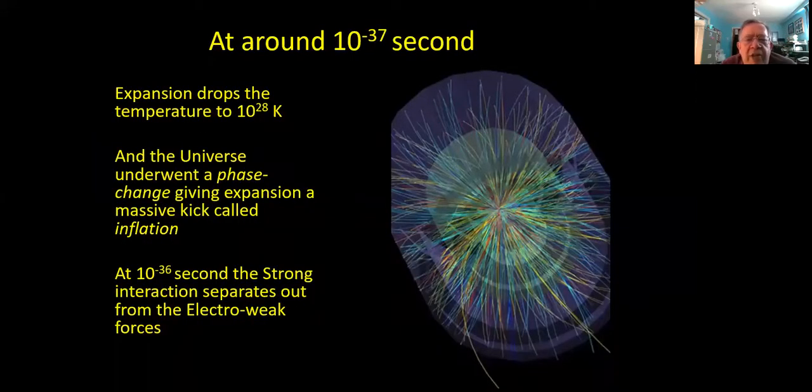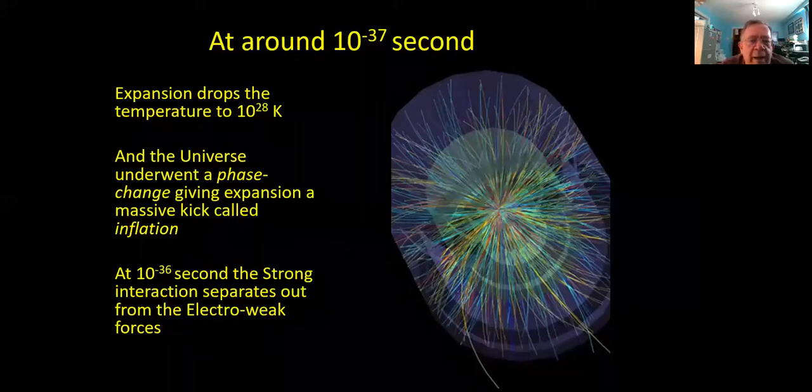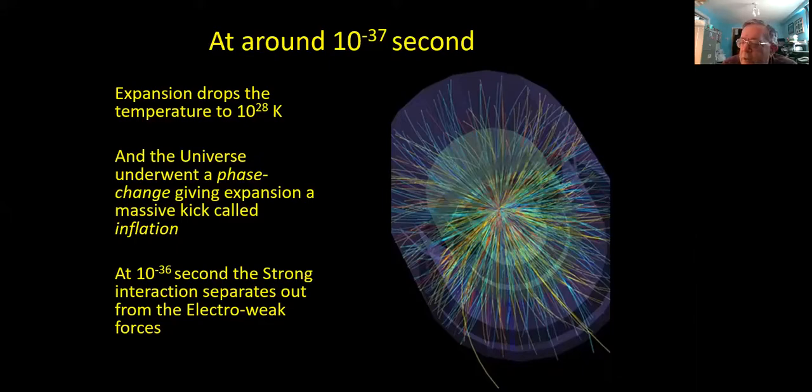And so around 10 to the minus 37 of a second after the Big Bang, so that's quite a few Planck times later. If you work it out, we've gone from 10 to the minus 44 to 10 to the minus 37. That's an increase in time of a factor of 10 million. And the expansion has cooled the universe down to a temperature of only 10 to the power 28 degrees Kelvin. And at this point, the universe underwent some sort of phase change, which gave it a huge kick, which scientists call inflation, which was an idea from Alan Guth back in the late 70s.